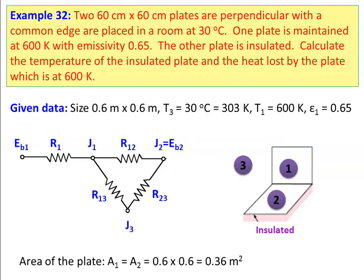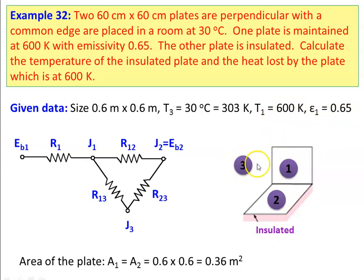Example number 32: Two 60 cm by 60 cm plates perpendicular to each other with a common edge are placed in a large room at 30 degrees Celsius. One plate is maintained at 600 Kelvin with emissivity of 0.65; the other plate is insulated. Calculate the temperature of the insulated plate and the heat loss by the plate at 600 Kelvin. Surface 1 is at 600 Kelvin with emissivity 0.65, surface 2 is insulated, and surface 3 is the room at 30°C, which is 303 Kelvin. The second plate is insulated and the room acts as re-radiating, so for surfaces 2 and 3 there is no surface resistance. This is the network diagram.